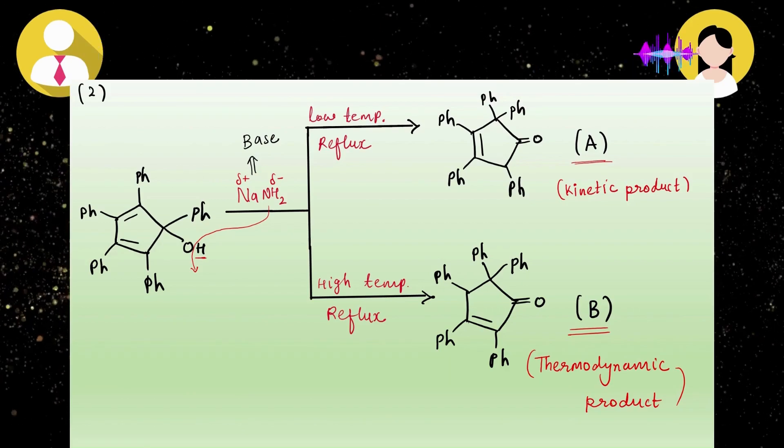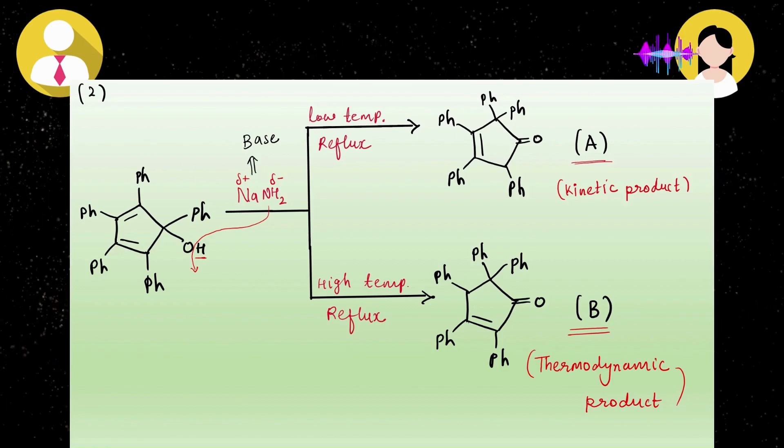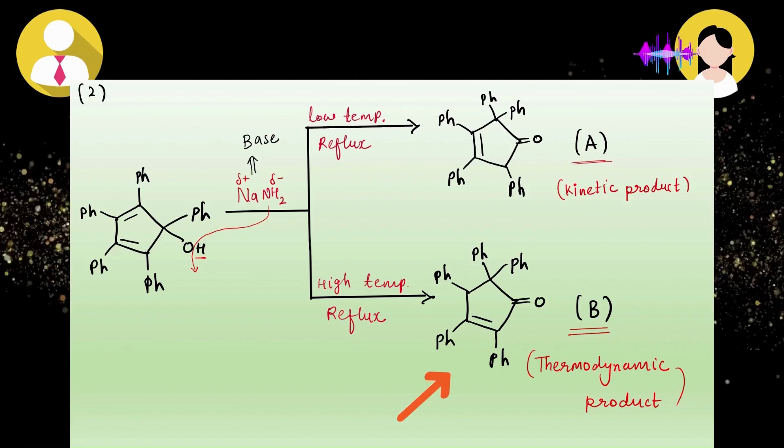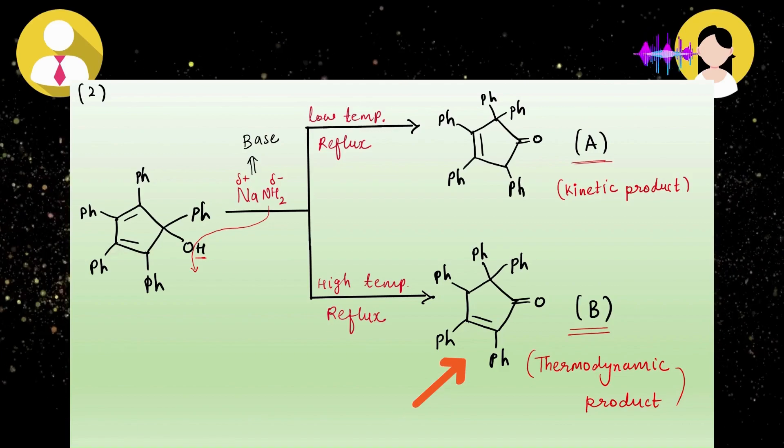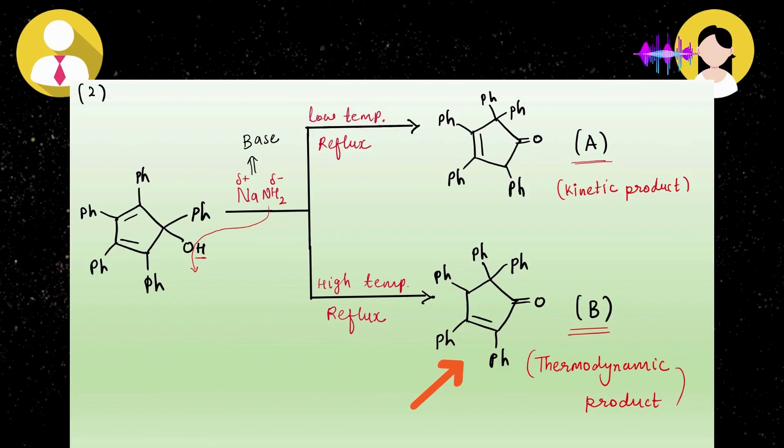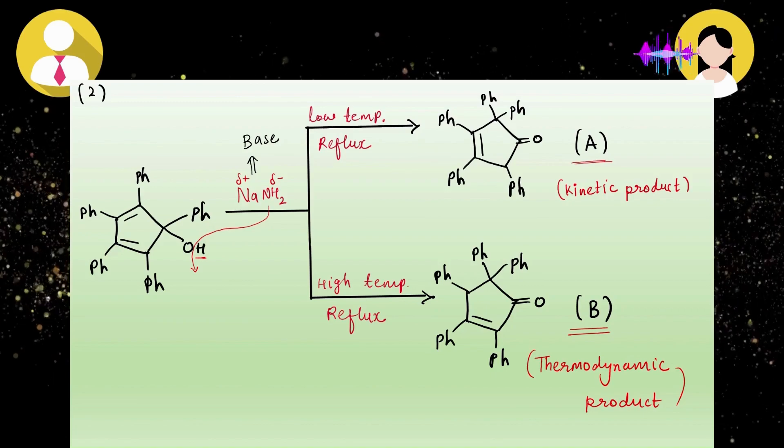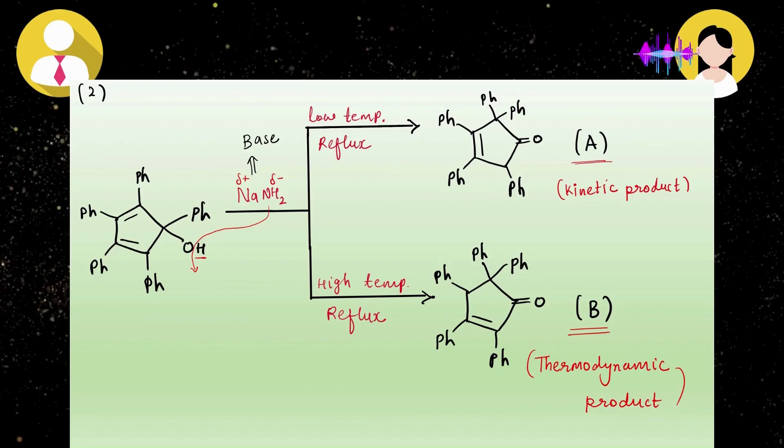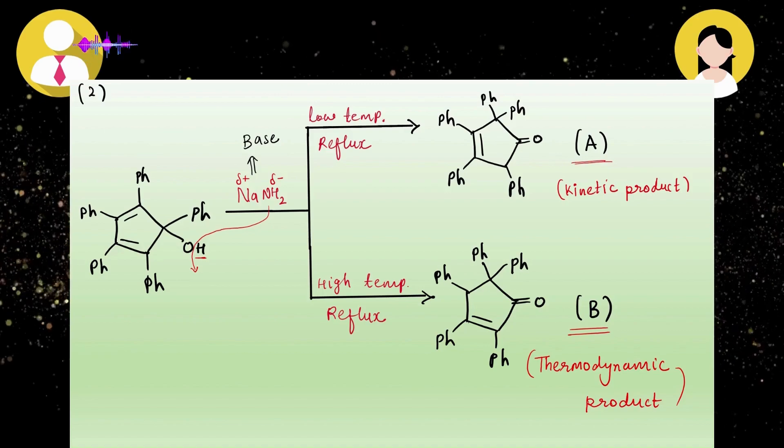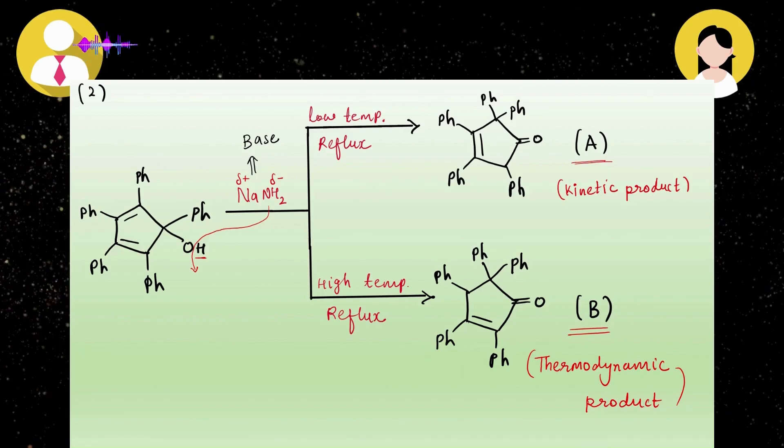He said that's true, but apart from the given conditions, how can you say that product A is kinetic and product B is thermodynamic product? I said on the basis of its stability—thermodynamic product is much more stable compared to kinetic product. If you look at product B, it is an alpha-beta unsaturated carbonyl compound and it is stabilized through resonance. This thing is missing in product A, so we can say that product B is more stable out of these two products.